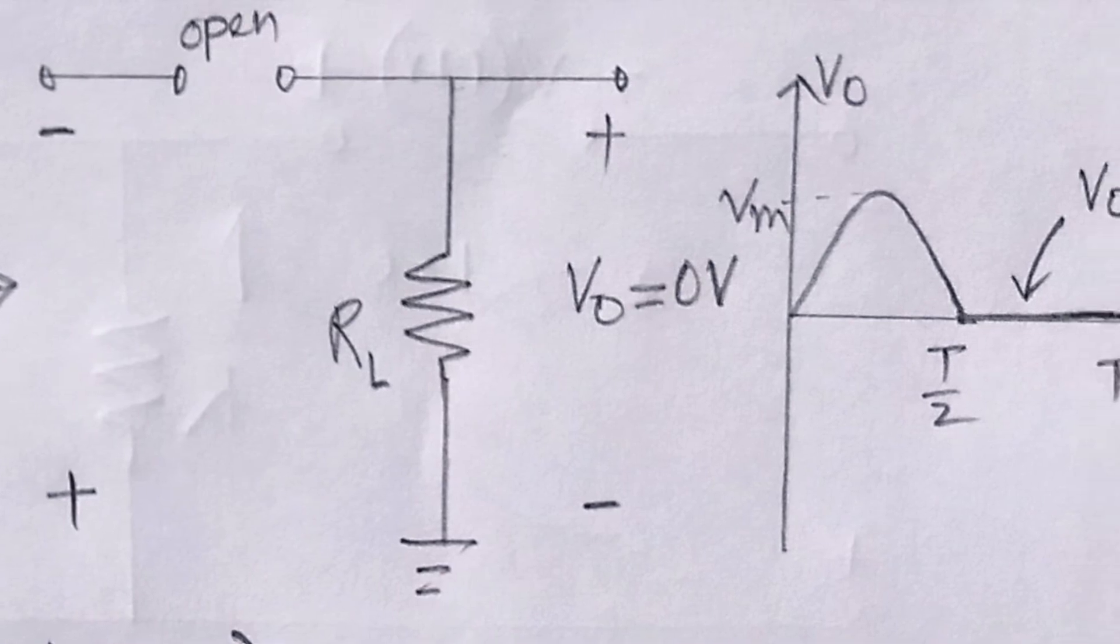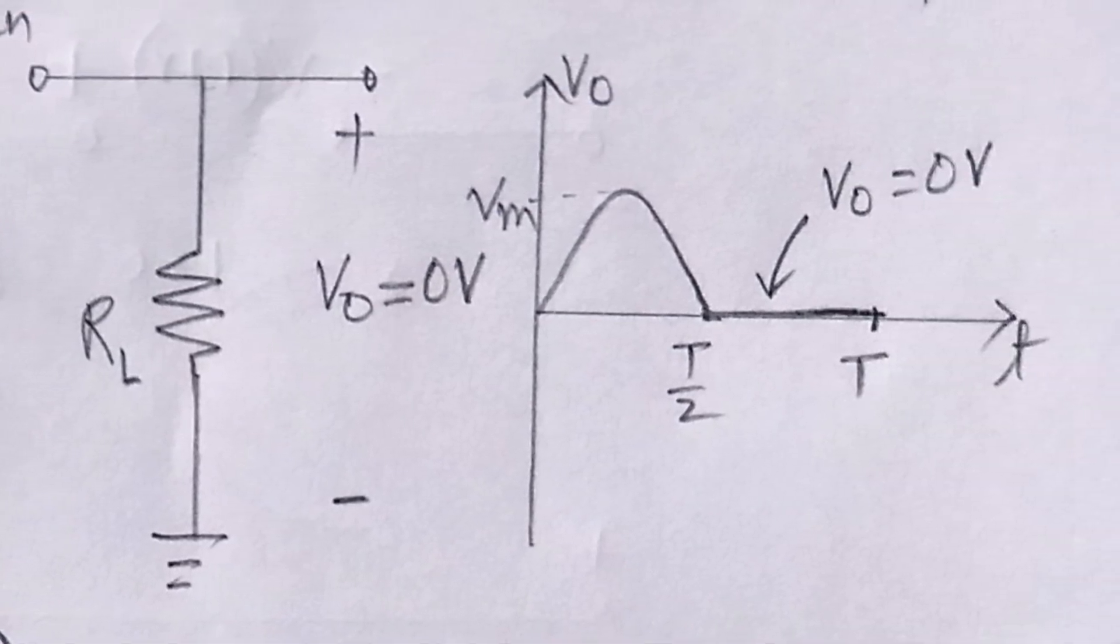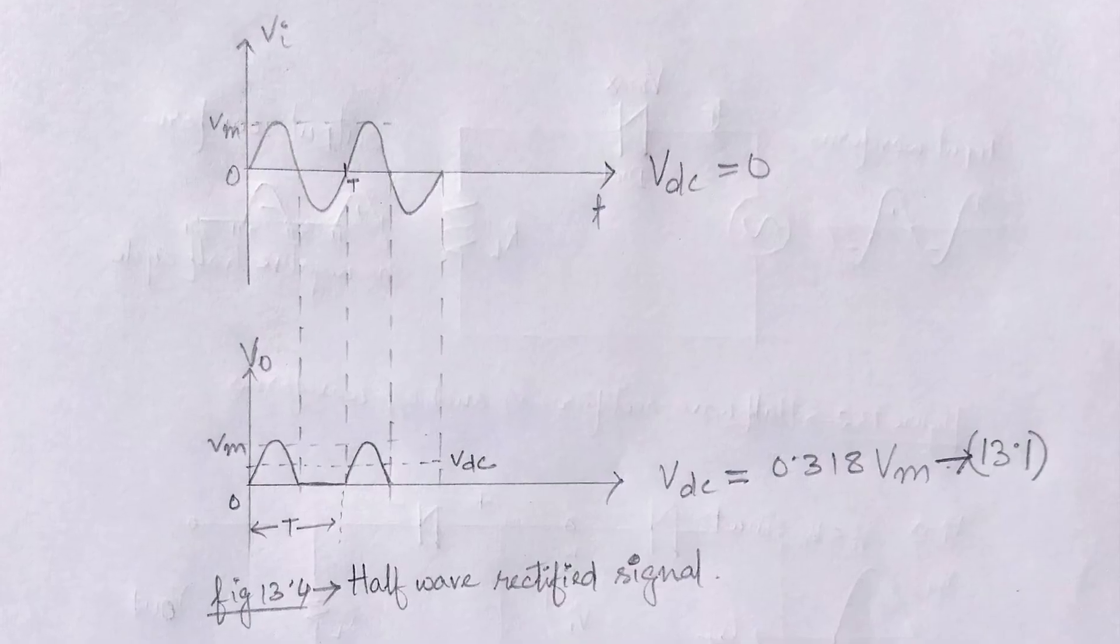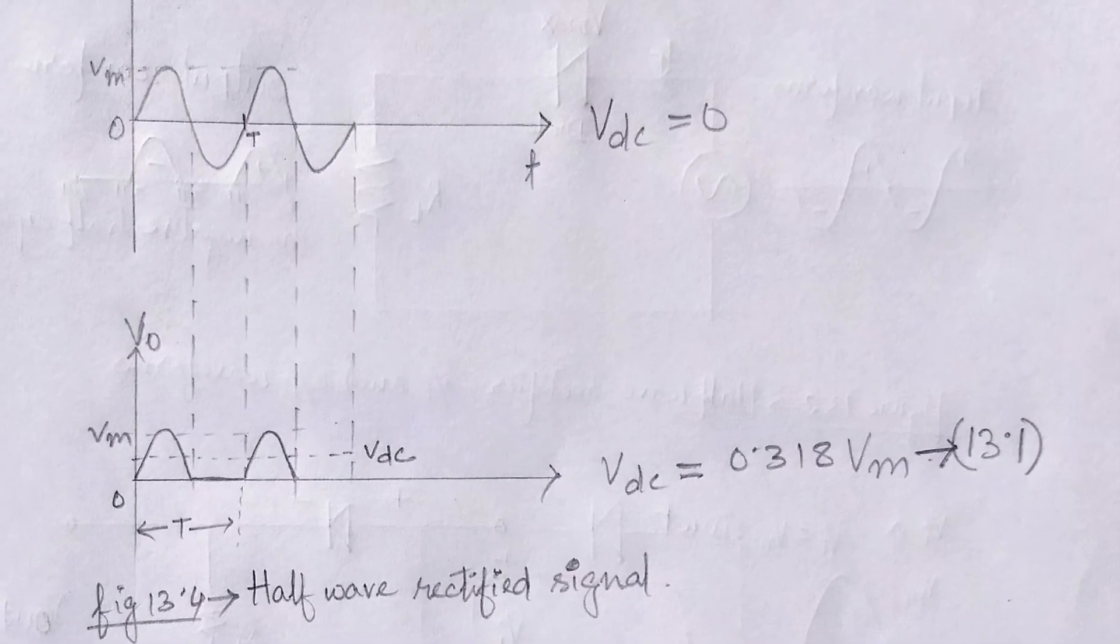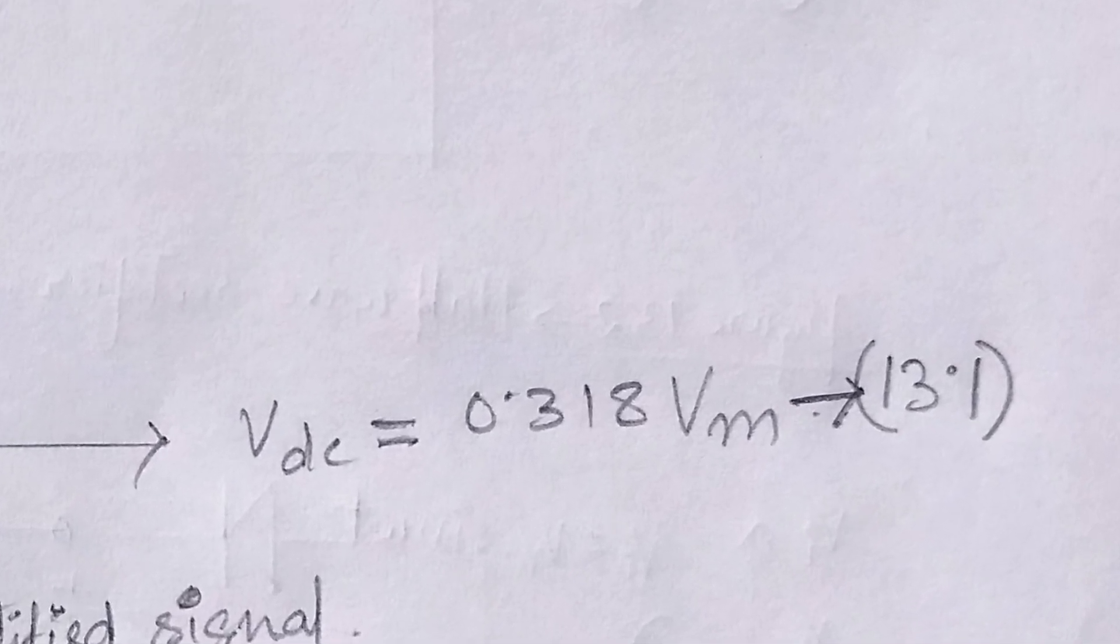The output signal Vout has a net positive area above the axis over a full period. Therefore the average value of the output is given by Vdc equal to 0.318 Vm.